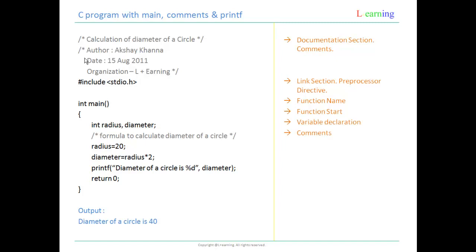The next statement here is a variable declaration. There are two variables — radius and diameter — which are of type integer, declared here. You can write any name for variables like a, b, c, d, or anything, but make it a habit to use proper, meaningful names. In this case we have declared two integer variables: radius and diameter, so one can quickly understand what these variable names are used for. Then we have a small comment showing the formula for calculating the diameter of a circle, which comes very handy in bigger programs.